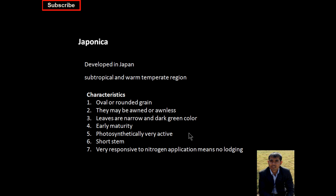Moving to Japonica — this is developed in Japan and the region where it can grow is the subtropical and warm temperate region. The basic characteristics of this species are: the grain is oval and rounded, and they may be awned or awnless. Leaves are narrow but have a very dark green color — that is why it is photosynthetically very active. One of the best qualities is early maturity and short stem, which is why it can respond to nitrogen very well, with no lodging. Its yield potential is high because of these basic characteristics.